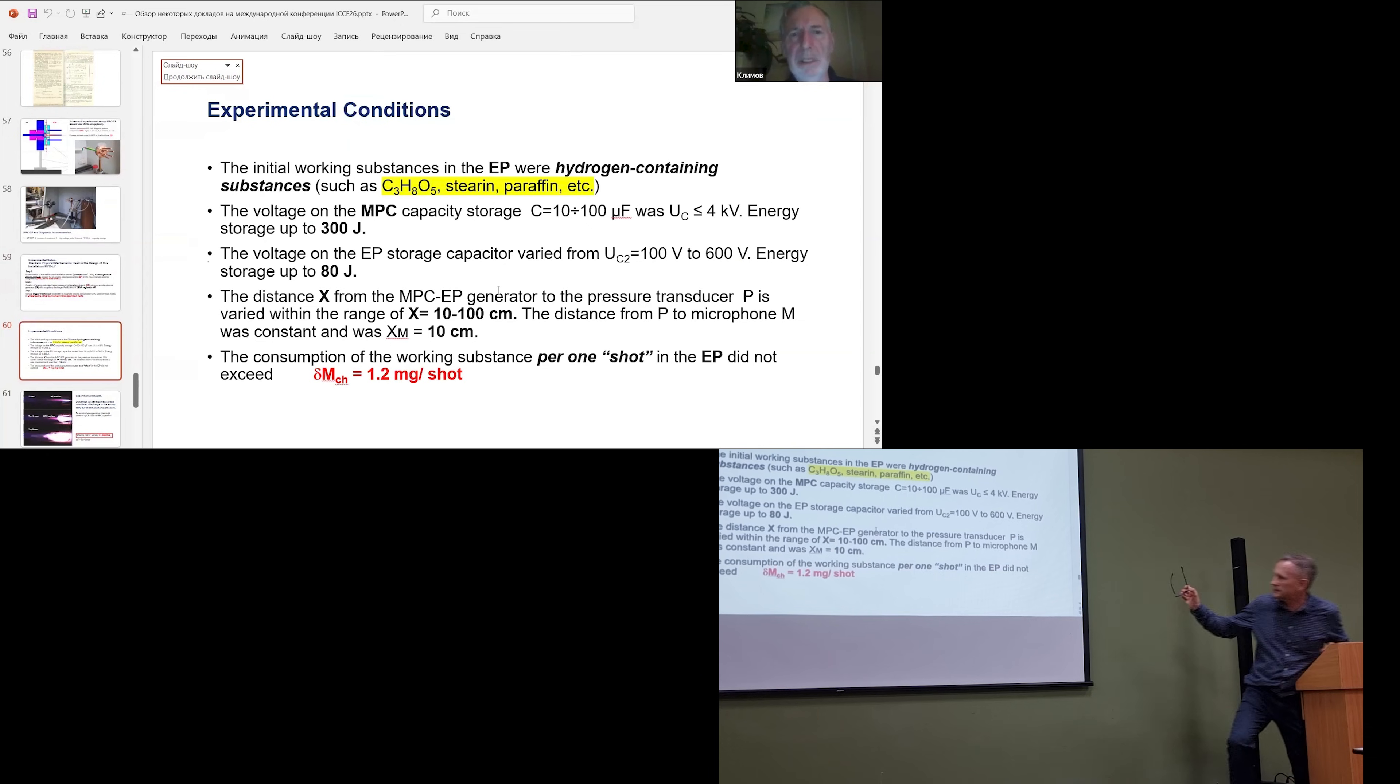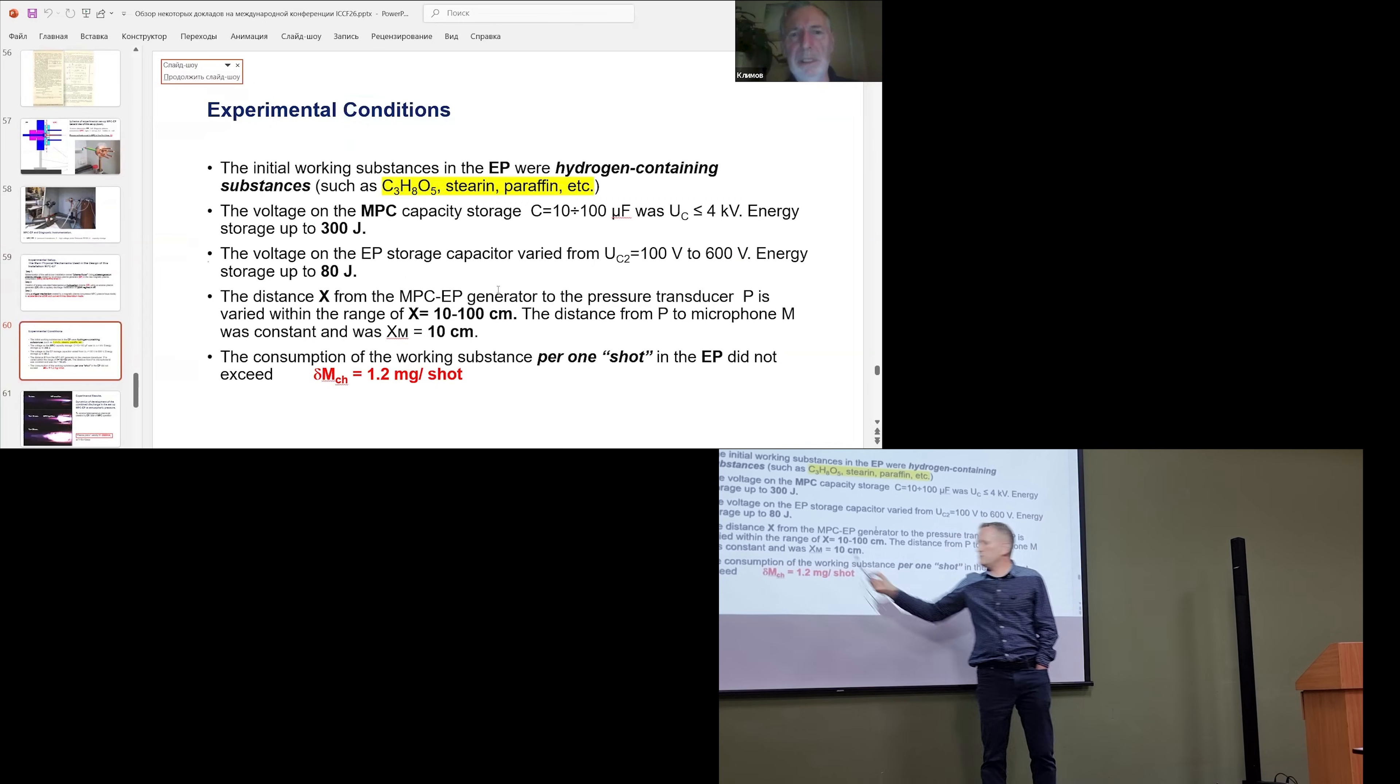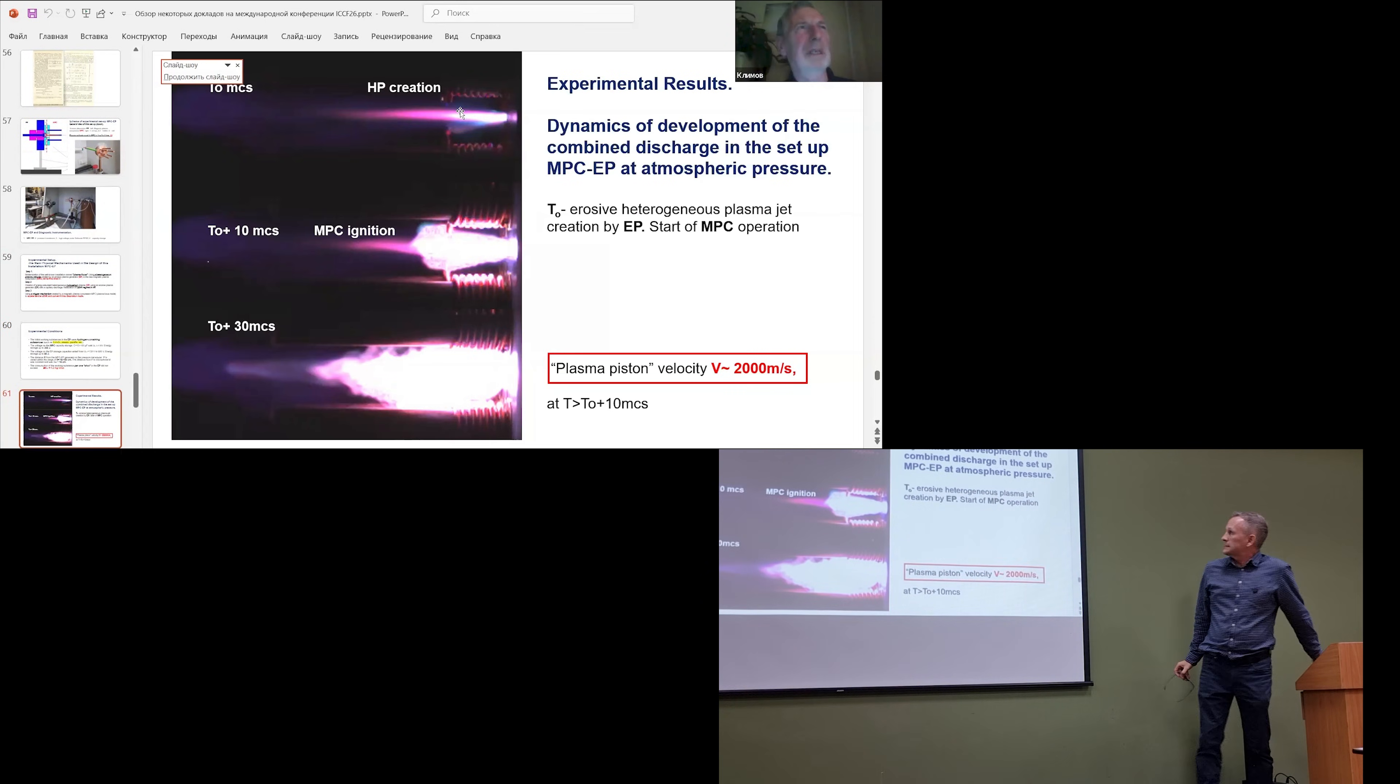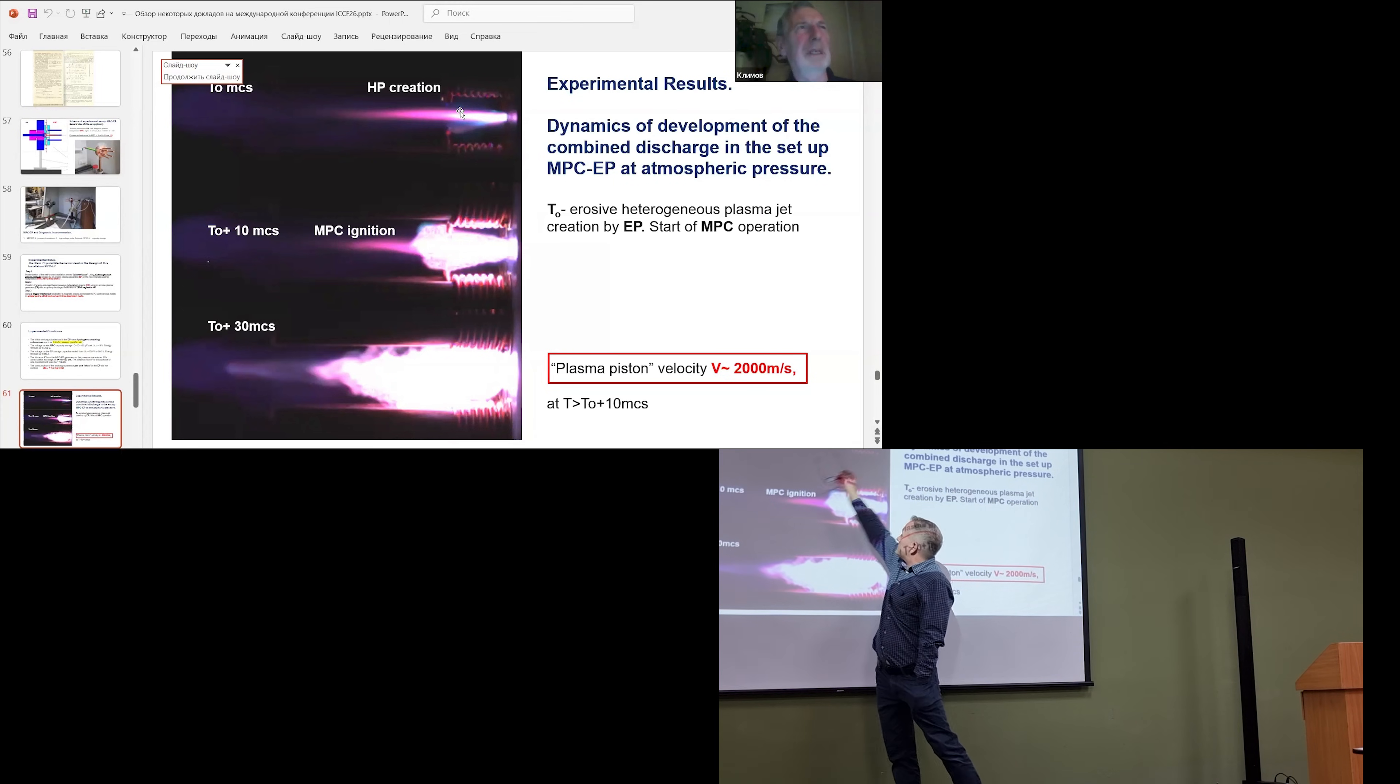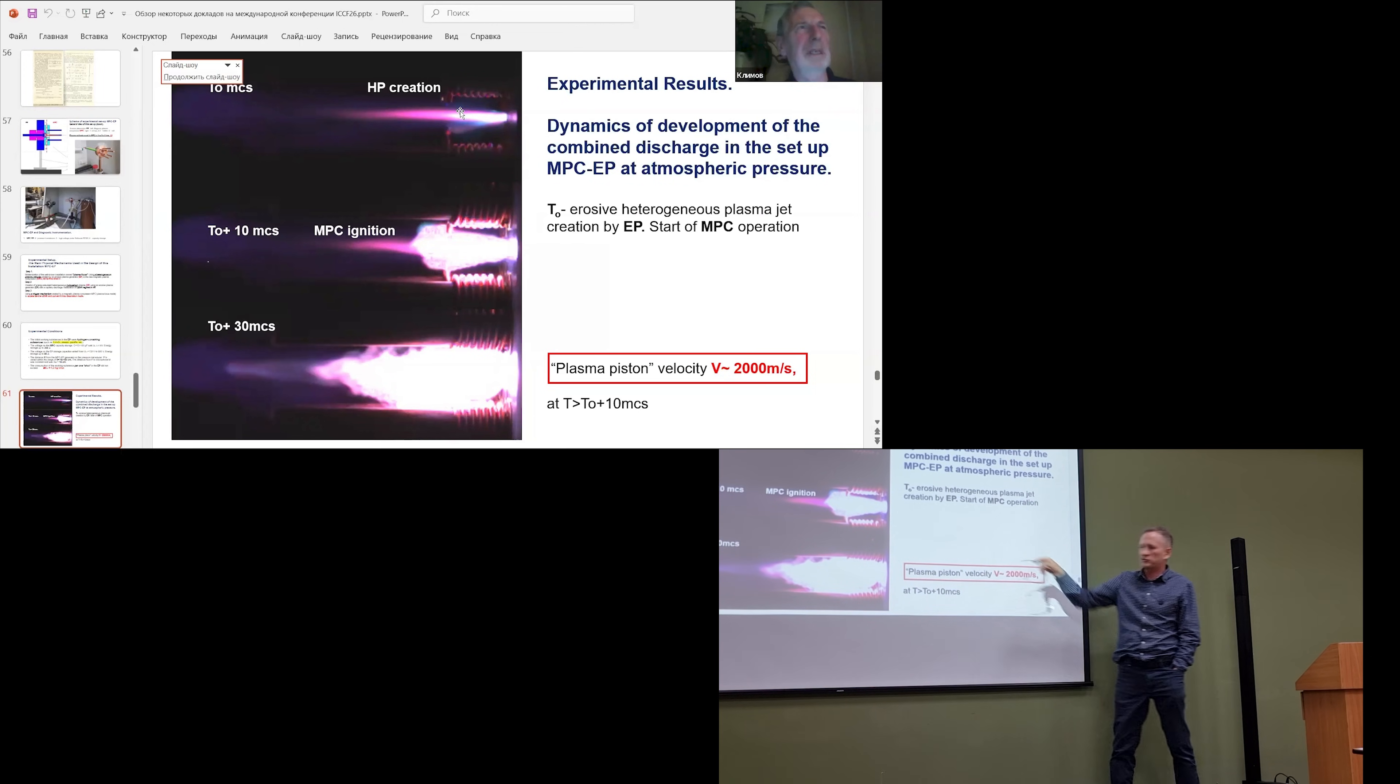So, we'll skip that. This is the money shot, they're using stearic, paraffin, a range of different materials. 1.2 milligrams per shot is your fuel. So, you create the erosion plasma jet, then you inject the helicity and it produces the overall structure. No central electrode to be destroyed. It's only the fuel.